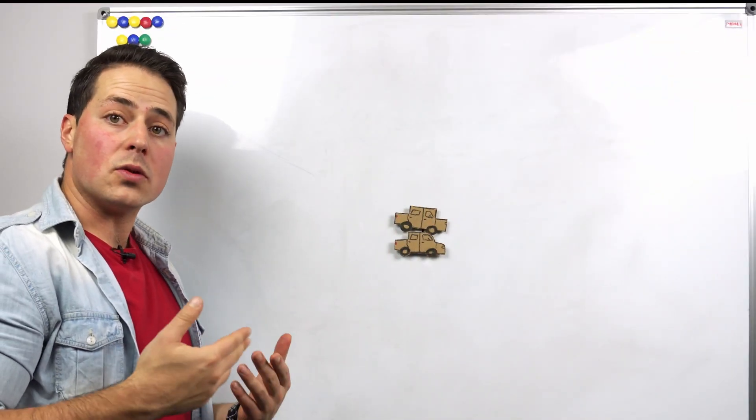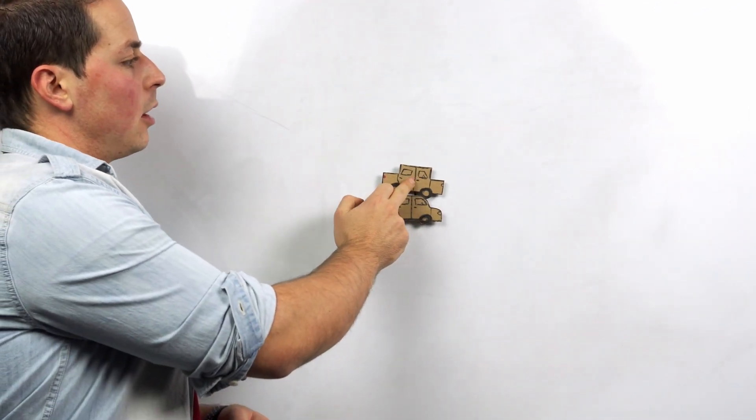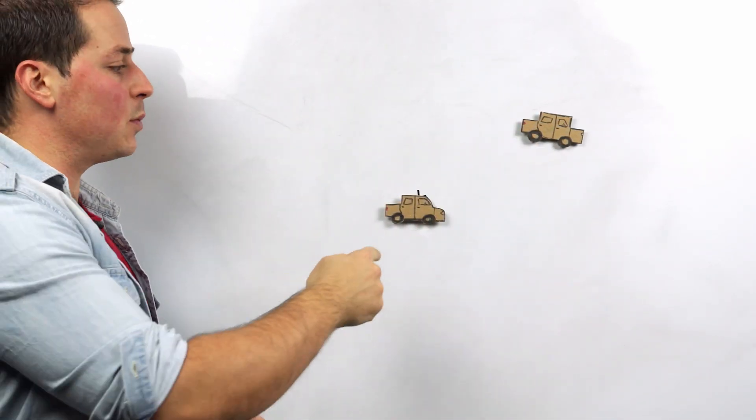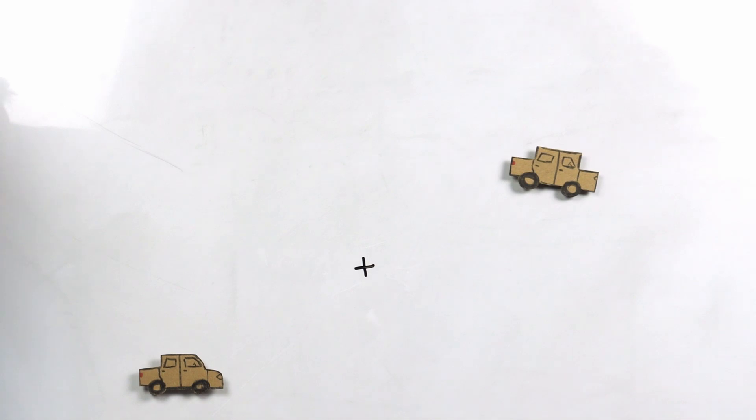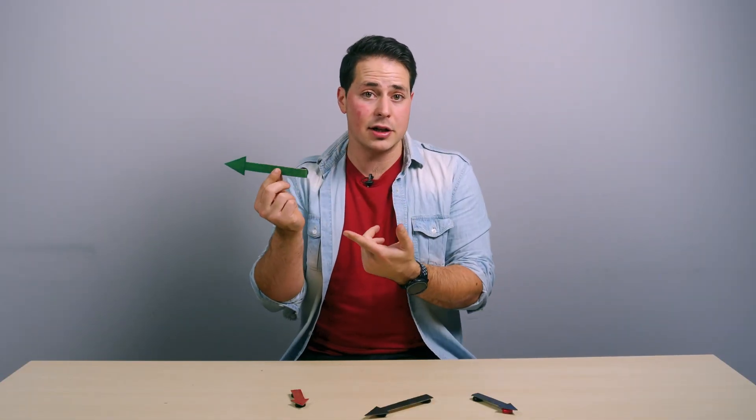The concept of quantities with direction is an intuitive one. Moving this car a certain distance this way is not the same as moving it the same distance but the other way. They end up in different places. A number alone cannot fully express this movement, but a vector with direction and magnitude can.